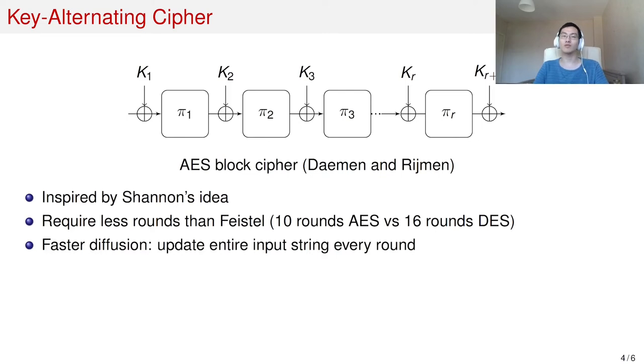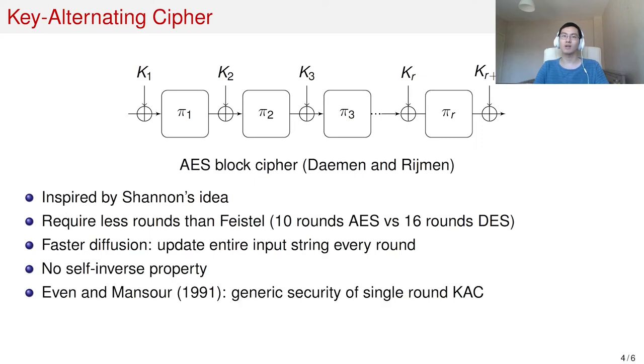Another property is fast diffusion, since the entire bit string is updated every round. However, the limitation of key-alternating ciphers is that they do not have the self-inverse property like Feistel ciphers. The generic security of key-alternating ciphers was first studied by Even and Mansour in 1991 for the single-round case, and by Bogdanov et al. in 2012 for the multiple-round case.